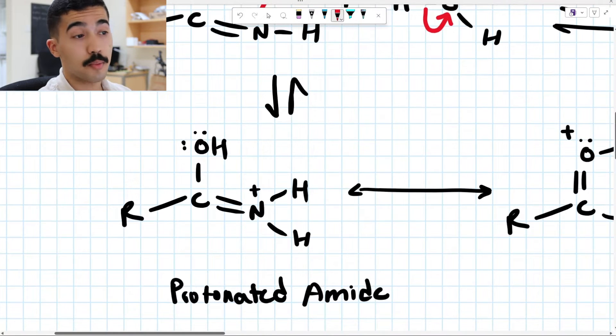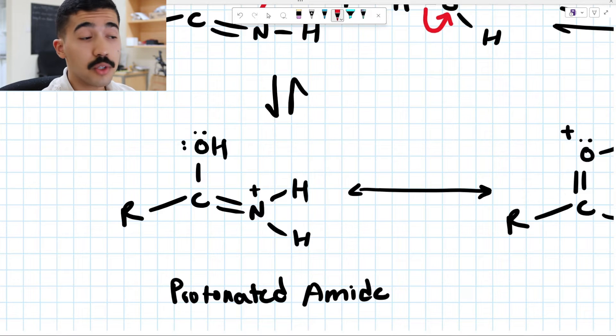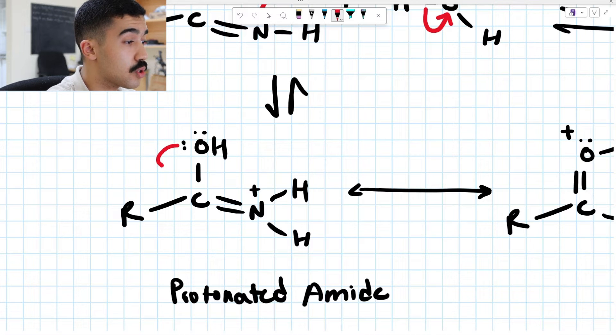With that, now we form our protonated amide. What's going to happen now is, again, resonance. You don't have to show this, but it is very helpful as a proof of concept when you're studying this stuff for the first time. You're going to build a double bond. This OH group is going to donate electrons and build a C double bond O.